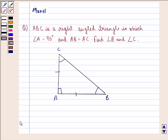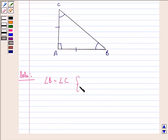Let us start with a solution to this question. Here we have angle B is equal to angle C because these are the angles opposite to equal sides, since AB is equal to AC.